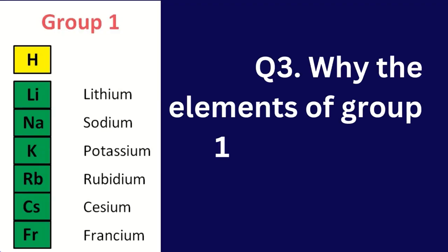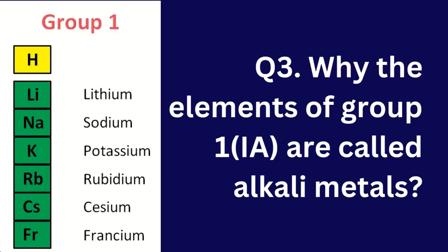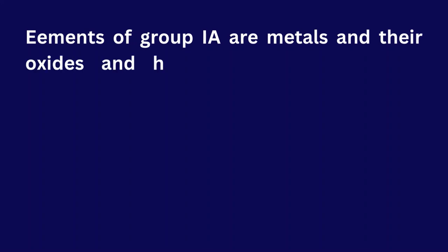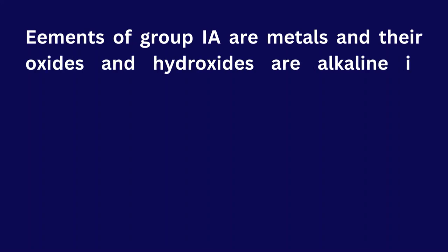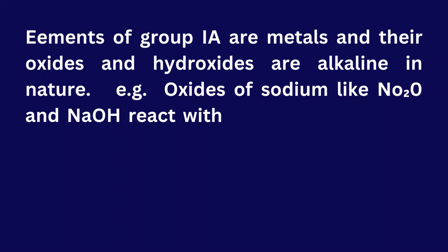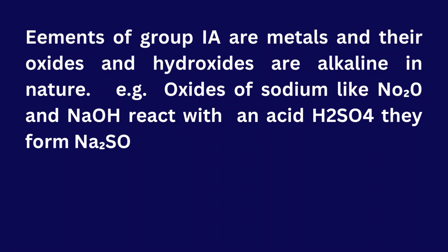Question 3: Why are the elements of group 1A called alkali metals? Elements of group 1A are metals, and their oxides and hydroxides are alkaline in nature. For example, oxides of sodium like Na2O and NaOH react with acid H2SO4 and form Na2SO4 (sodium sulfate) and H2O.